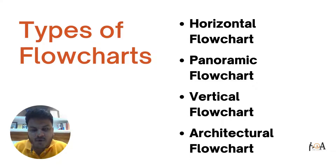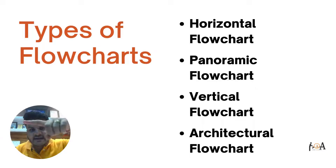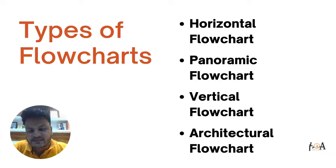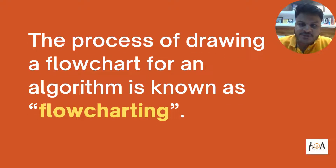The next type is vertical flowcharts, which are most commonly used for conferences, events, or programming functions. We generally represent any system with a flowchart that extends in length — it is essentially the horizontal flowchart tilted vertically. Architectural flowcharts are used to explain complex processes with the help of arrows, structures, and different processes. So mainly, the types of flowcharts are: horizontal, panoramic, vertical, and architectural.